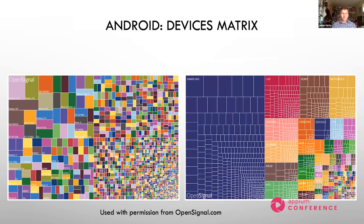Here's a quick example from OpenSignal. They wanted to understand the distribution of Android phone models using their application — which tested network signal strength. They collected this information from users each time they used the app. The most popular device was a Galaxy S3, then S5, then S4, with several thousand devices in the matrix. Reordering by manufacturer, Samsung devices were by far the lion's share — around 40% of all devices. This is the sort of information that helps us decide which devices to prioritize in our testing.